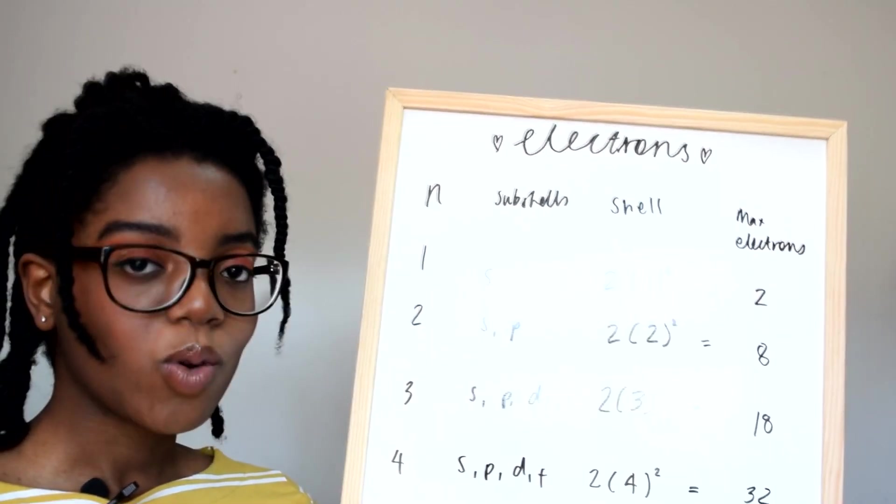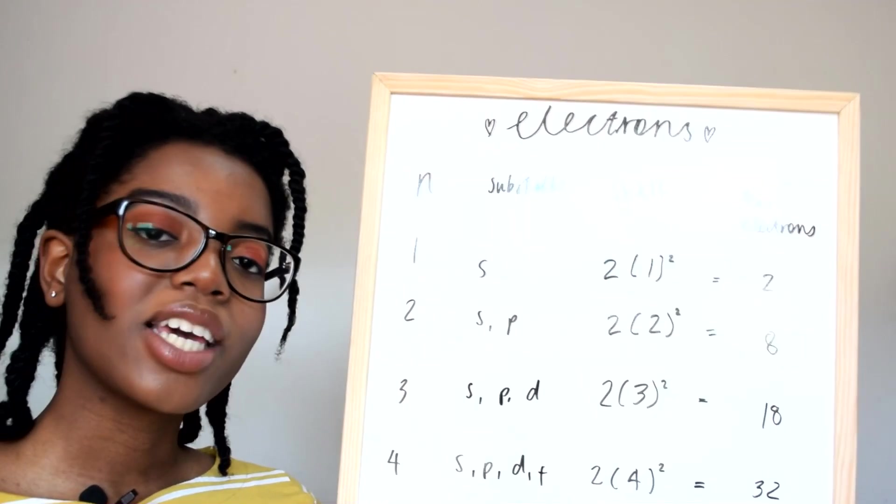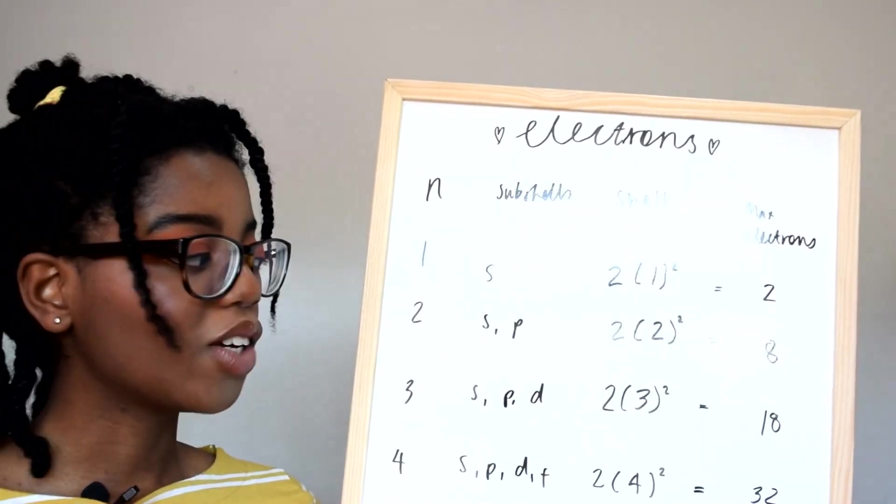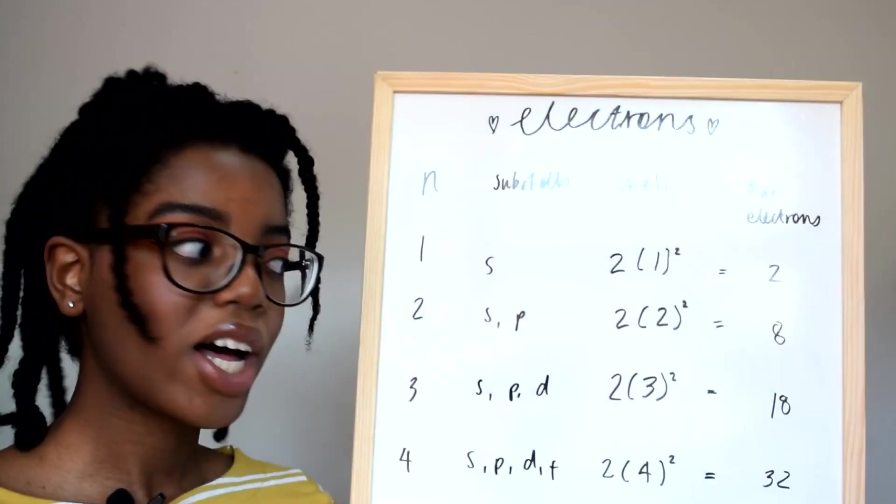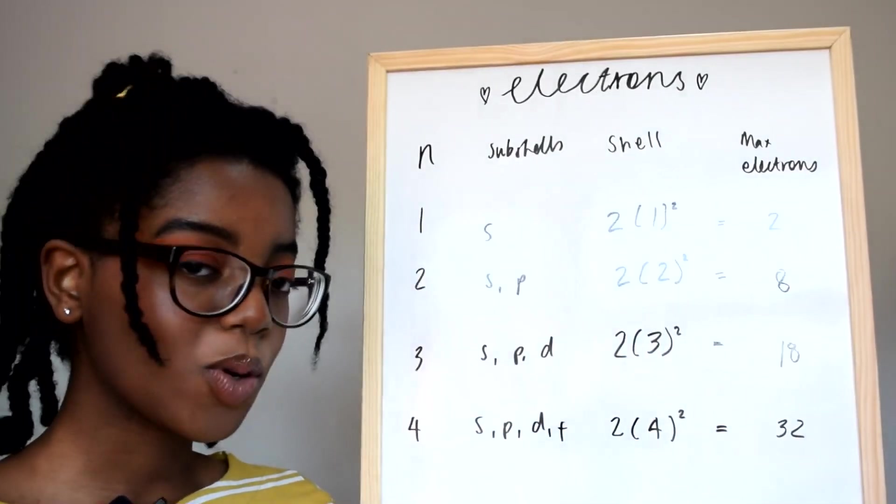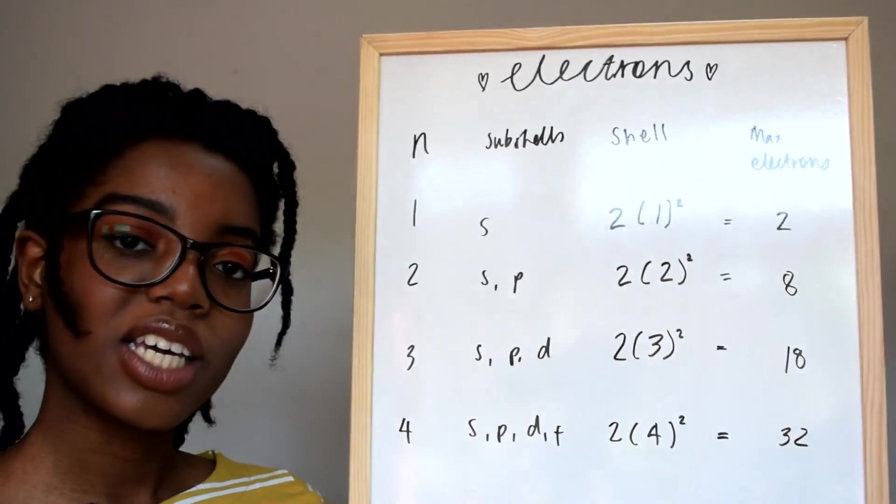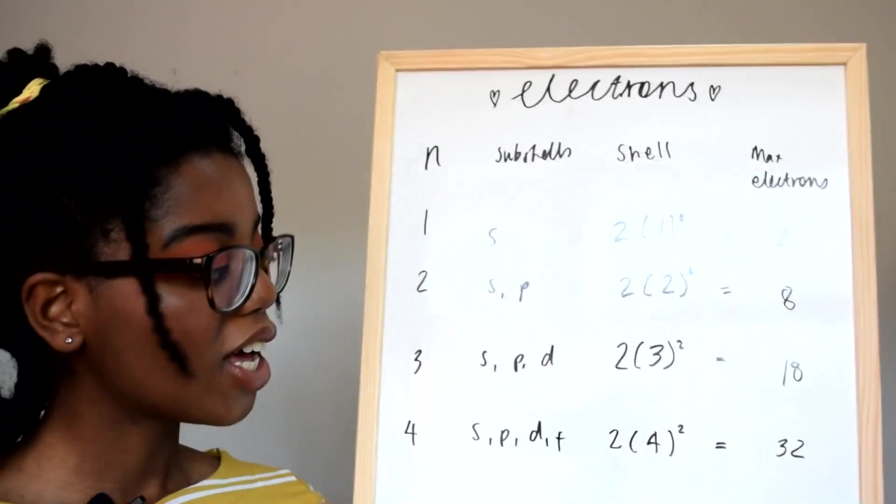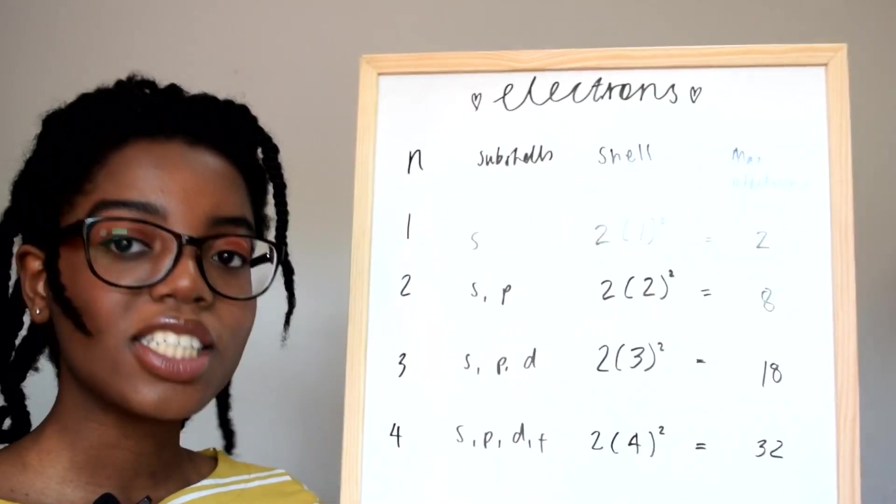With three principal quantum shells you'd have S, P, and D, which would give you 2 times 3 squared which is 18. And with four principal quantum shells you'd have S, P, D, and F subshells and you would get 32 electrons.